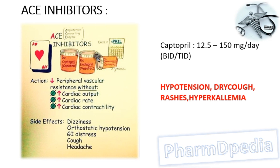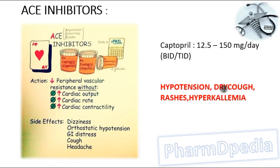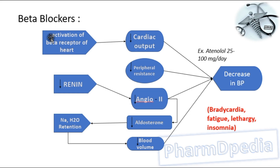Angiotensin converting enzyme inhibitors — these drugs end with the suffix '-pril'. Examples: captopril, enalapril, benazepril. The mechanism of action is to lower peripheral vascular resistance without increasing cardiac output, cardiac rate, or cardiac contractility. Captopril, 12.5 to 150 mg per day, is suggested. Adverse reactions include hypotension, dry cough, rashes, and hyperkalemia.